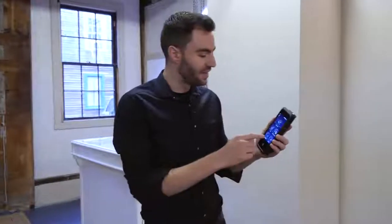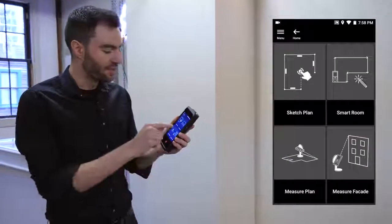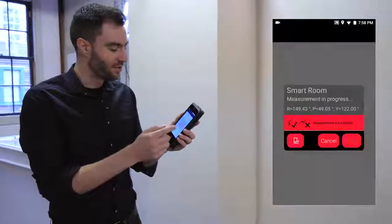So right on the main menu, you can see I have this sketch and documentation button. If I click on that, you can see I have the smart room option and I'm going to choose that one.